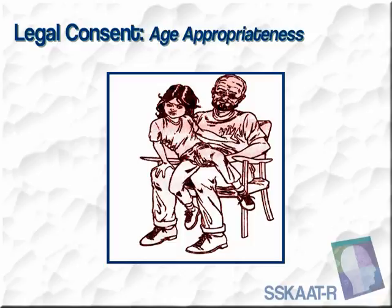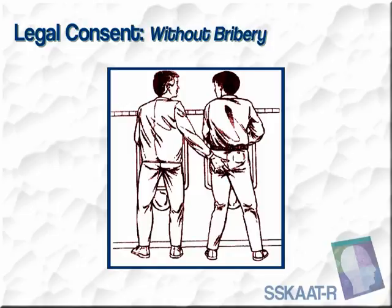Let's take a look at some of the issues of consent that need to be evaluated. First is the concept of legal consent. One of the categories that is often challenging for individuals is to understand the issue of age appropriateness with regard to sexuality. In this picture, we see an image of a man who is touching a young child in an inappropriate way. We're examining legal consent and trying to determine if the individual understands the concept that legal consent occurs without bribery. The question asked is whether it would be okay if the individual does it if he gives him $50.